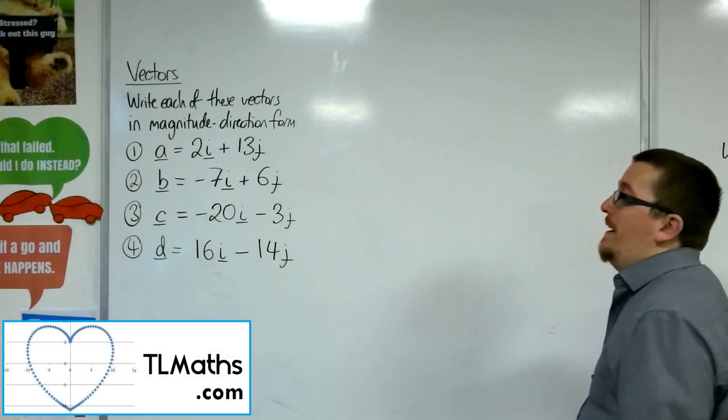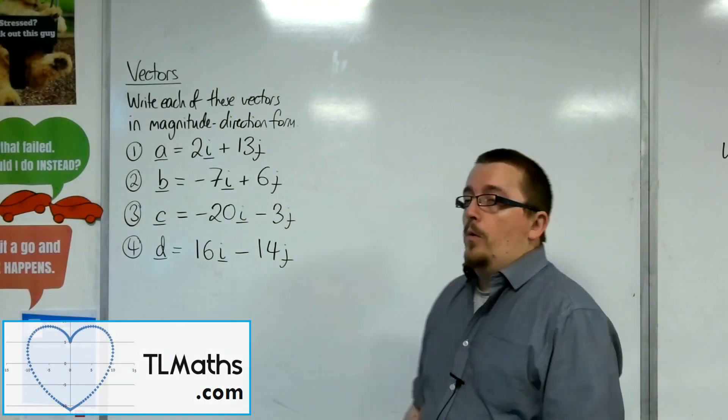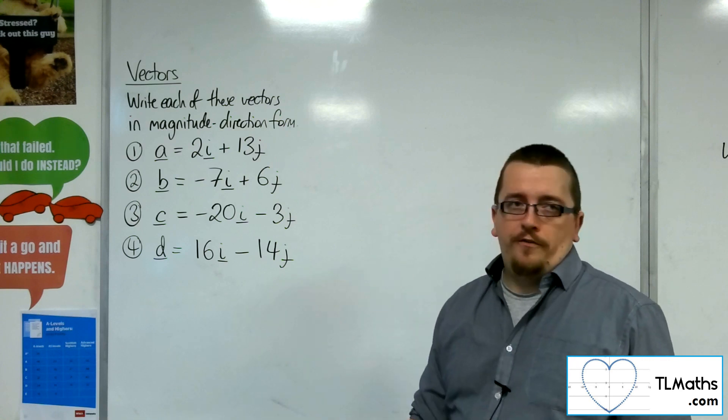Okay, so each of these vectors I've written in component form, and I want to write them instead in magnitude direction form.